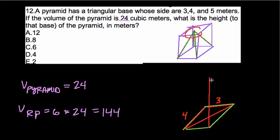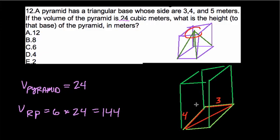So now when we draw our rectangular prism here, just draw this up, we can quickly find the height. We know that the volume of this rectangular prism is 144. And we know the base has a size of 3 by 4, which is 12. 12 goes into 144 12 times.